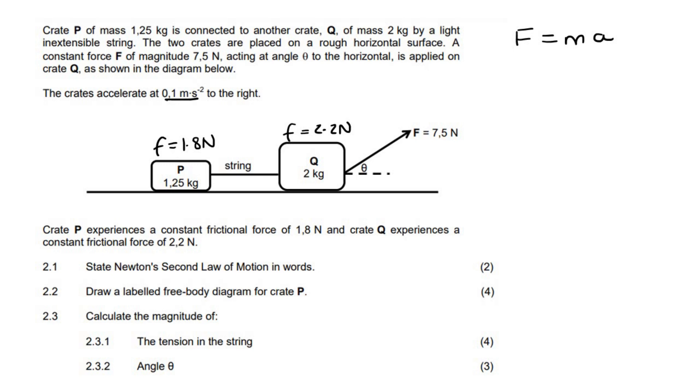But when you state Newton's second law, get the A by itself. So that's going to give you A equals F over M. Actually, it's F net. So Newton's second law tells us that if a net force acts on an object, the object will accelerate.